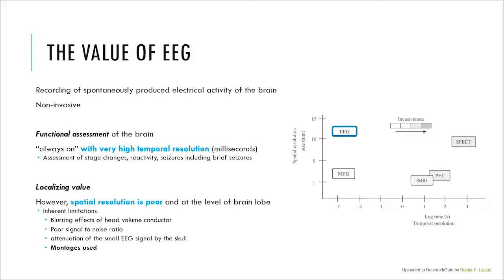Before we talk about in which montage to record or display an EEG, let's talk about the value of the EEG in the critically ill patient in the ICU. EEG is the recording of spontaneously produced electrical activity of the brain, achieved completely non-invasively. We affix electrodes to the scalp and record brain activity, allowing a functional assessment of the state of the brain. The EEG is always on and has an exceedingly high temporal resolution in the order of milliseconds.